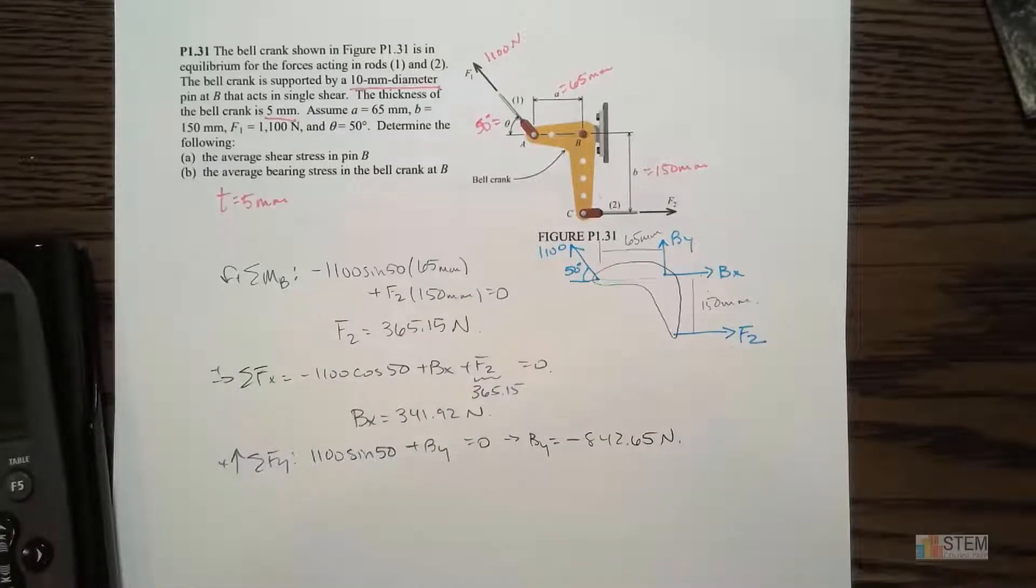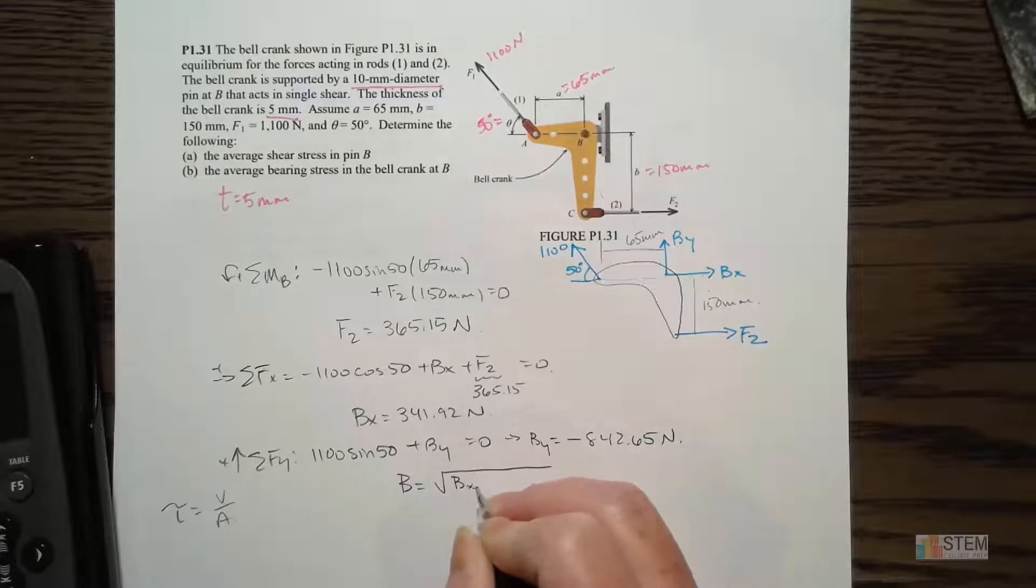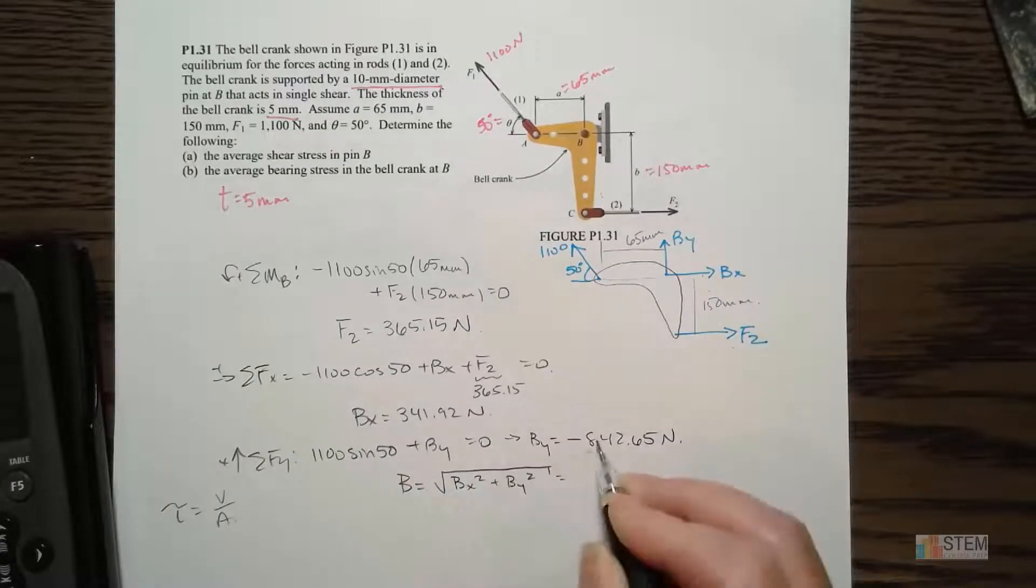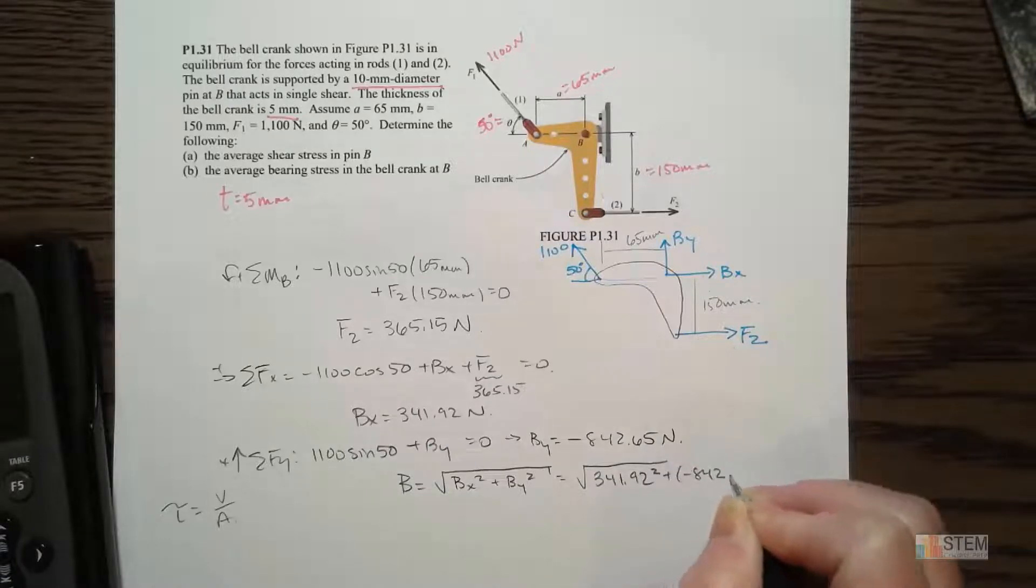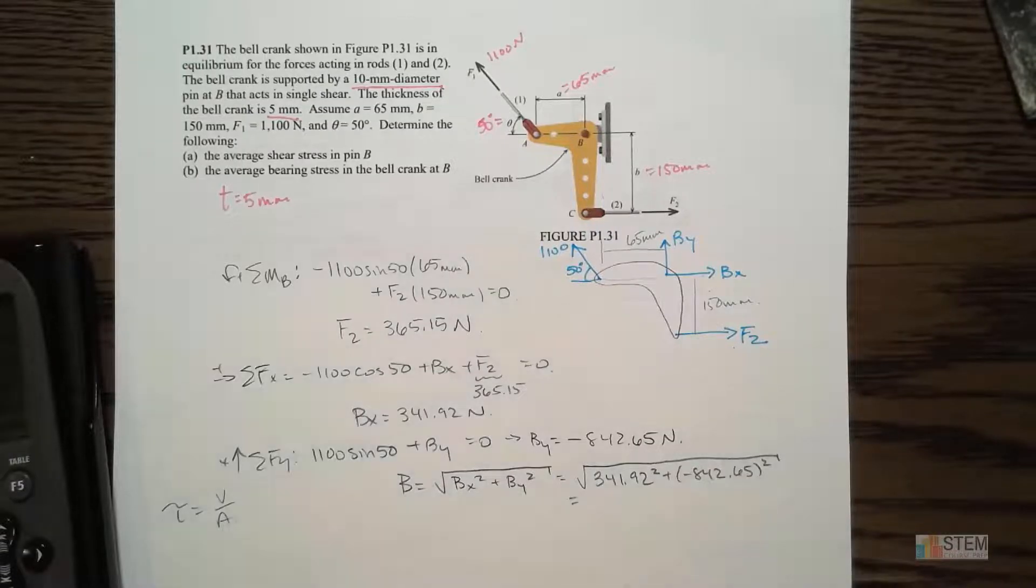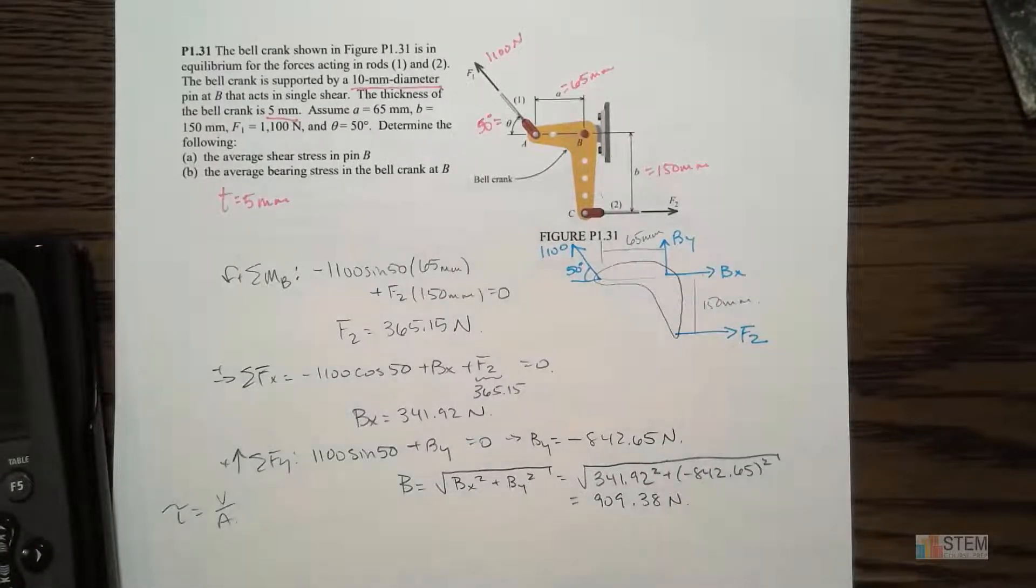Now, let's see what else we need. So what we're mainly told to look for, first of all, is to find the average shear stress in pin B. Now, I've got BX, BY. Well, we know the shear stress equation is basically the shear force over A. So we know we've got that. So we need a magnitude. I need to take the magnitude of BX and BY. So since we're squaring BY, that negative is not going to matter. So we've got square root of 341.92 squared plus the negative 842.65 squared. So that magnitude is 909.38, and that's Newtons. This is what we're going to use in our shear equation for V.